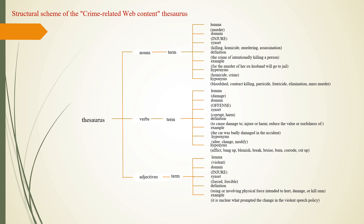Each element specified in the term tag represents a word of the given part of speech with its synonym series — synsets, definitions, examples, hyponyms, and hypernyms — in the four languages represented by XML child elements. The most numerous relations between the synsets of nouns are generic relations, where the specific synset is called a hyponym and the general one a hypernym.